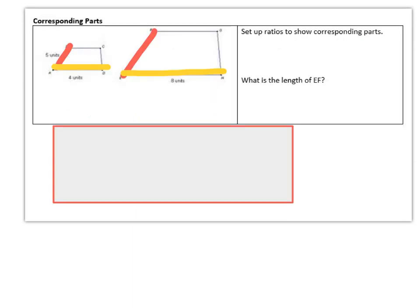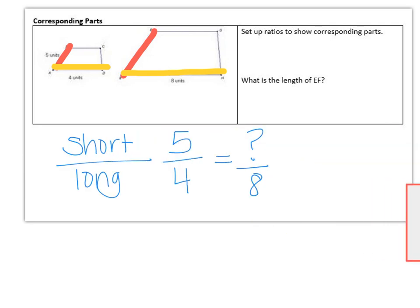On our next example, you want to set up a ratio to show corresponding parts. So you're comparing the short side of this trapezoid to the long side. Even though the picture doesn't really look like short, long, but you get the idea. So the short side on the first one is 5 units and the long side is 4 units. And then on the second one, we don't know the short side, but we do know the long side. So using that information, we can see that this would have been multiplied by 2 to get to 8, which means we'd have to multiply by 2 to get 10 as the missing measurement for EF.